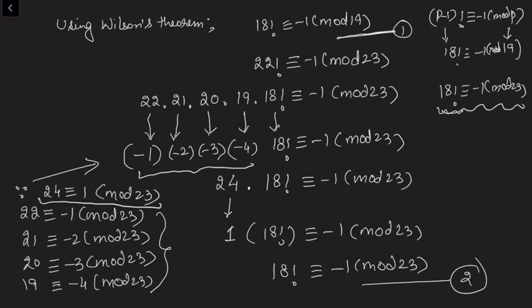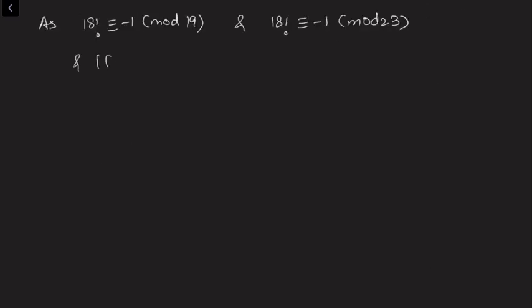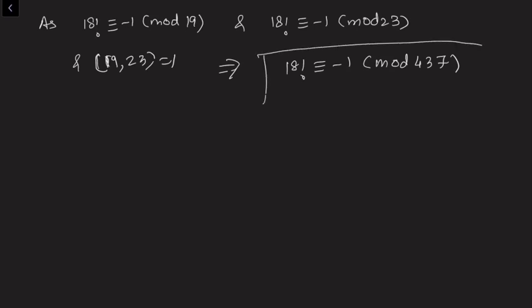We now have both congruences: 18! ≡ -1 (mod 19) and 18! ≡ -1 (mod 23). Noting that gcd(19, 23) = 1, we conclude that 18! ≡ -1 (mod 437). This completes the proof.